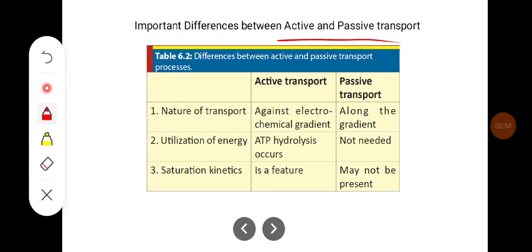Active transport occurs against the electrochemical gradient, whereas in passive transport it is along with the gradient. In active transport, ATP hydrolysis occurs, whereas in passive transport ATP is not utilized. Saturation kinetics is a feature of active transport but may not be present in passive transport, except for facilitated diffusion.